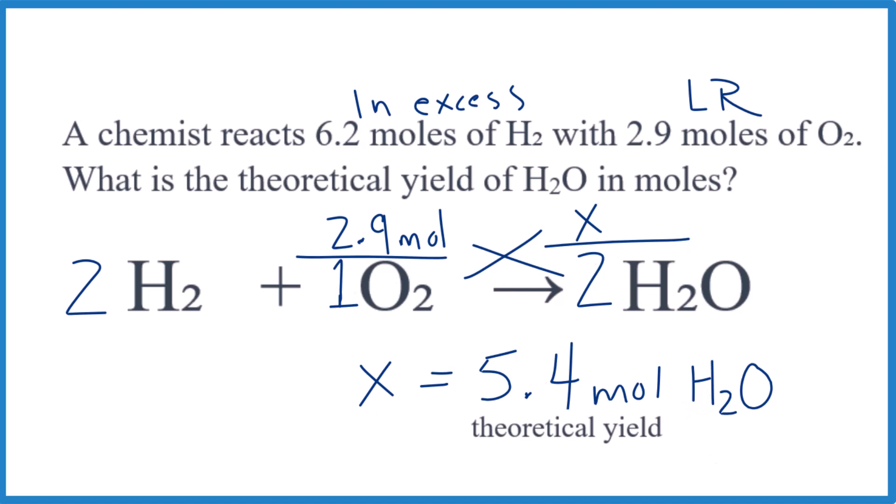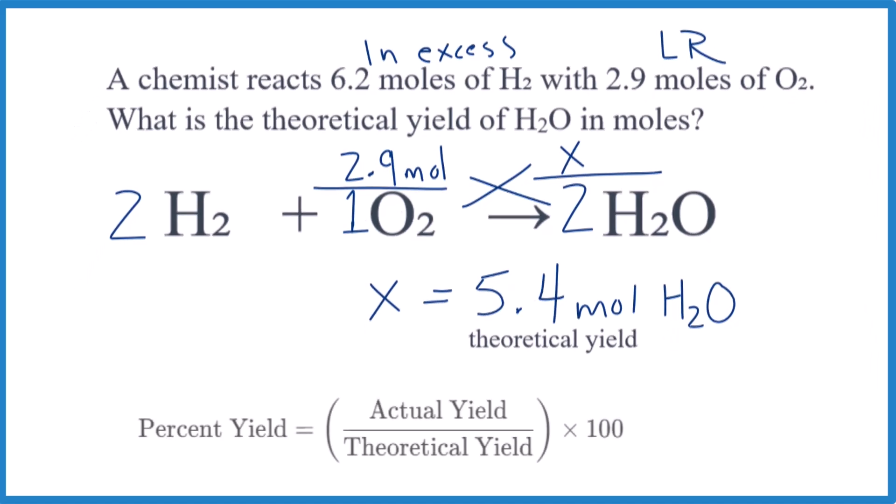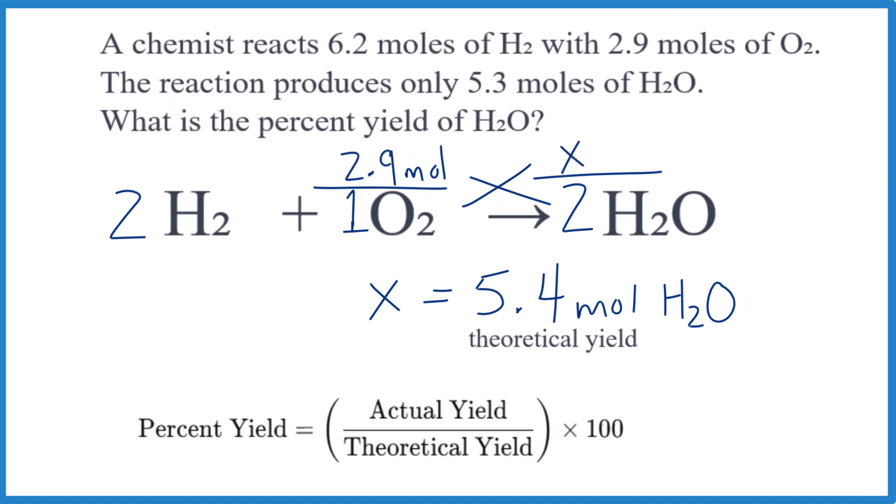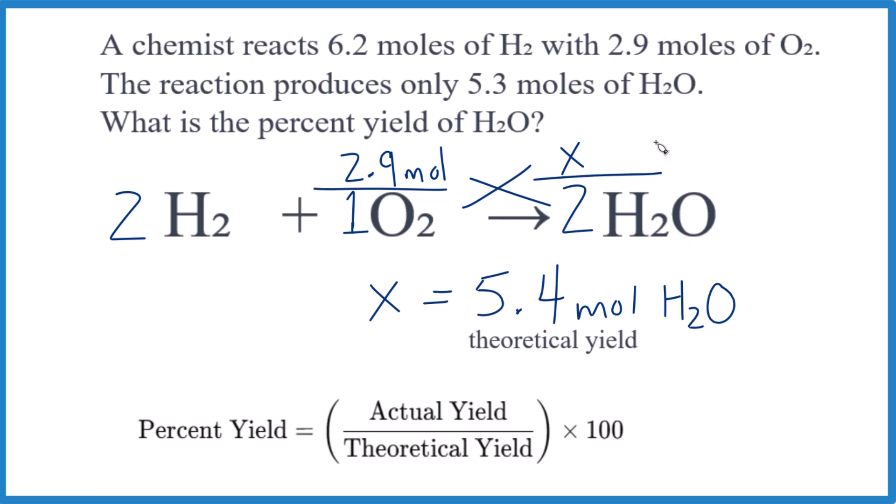So to find the percent yield, here's how you do it. Let's change the problem up here. This is a typical percent yield problem. So the numbers here are the same, our theoretical yield is the same, but now it says the reaction only produces 5.3 moles. So we're talking about in the lab.